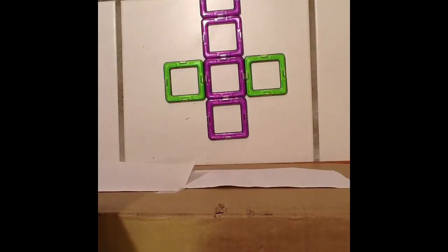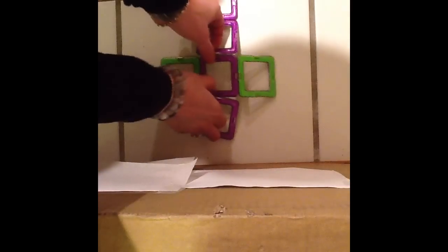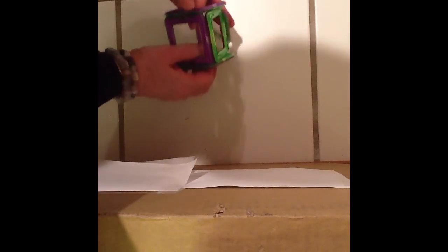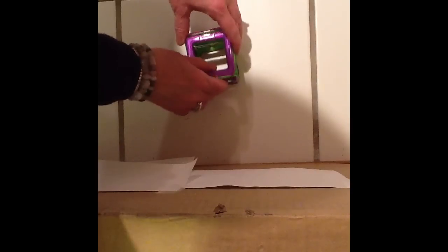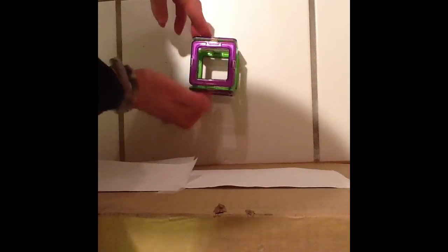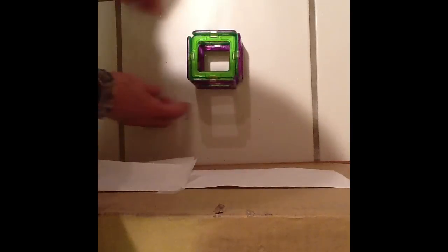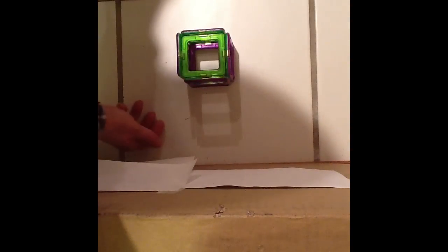The net you see here is a net for a cube. It has six faces, all of them are squares, and when I fold it up you will see that it folds into a cube. The purple surfaces are the lateral area.